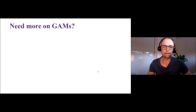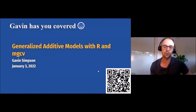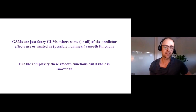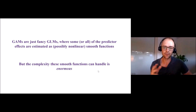That's all I'll say about GAMs themselves, because Gavin Simpson gave a very nice overview webinar for this seminar series covering how GAMs are estimated, the different kinds of basis functions you can use, and strategies for fitting them. So if you're interested in learning more, I'd highly recommend looking at his webinar and resources. To wrap up: GAMs are basically fancy GLMs where some or all predictor effects are estimated as potentially nonlinear smooth functions, with penalties to restrict shapes and avoid overfitting. The complexity is enormous — very valuable for ecological models.